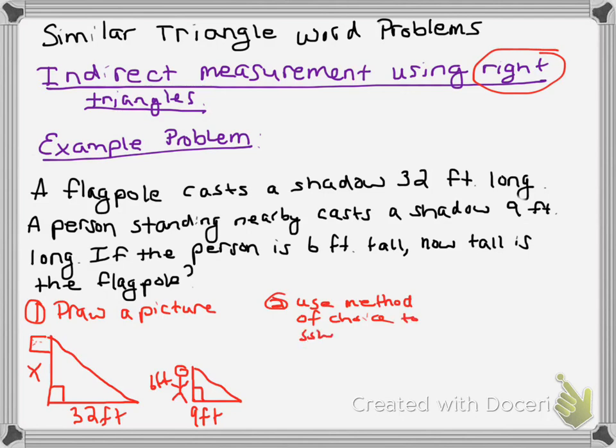I'm going to use proportion method. So I have X over 6 equals 32 over 9. Third step: cross multiply and solve for unknown length.